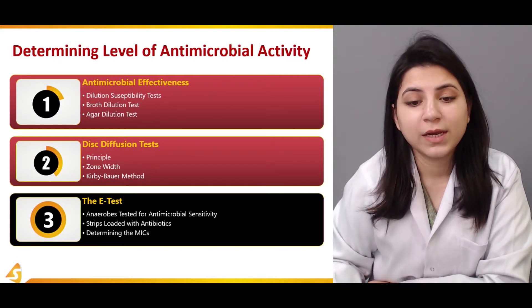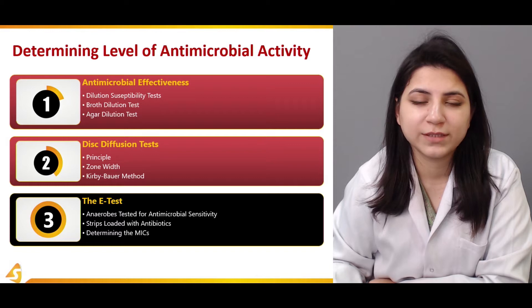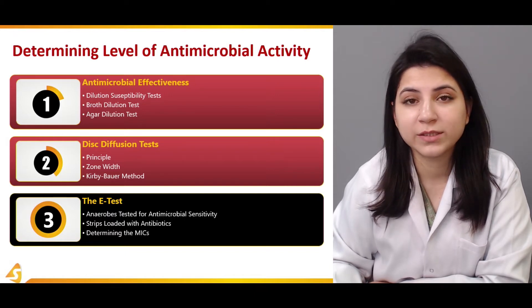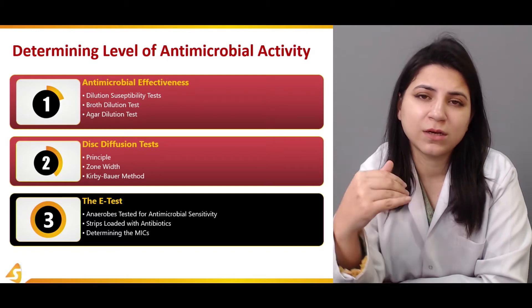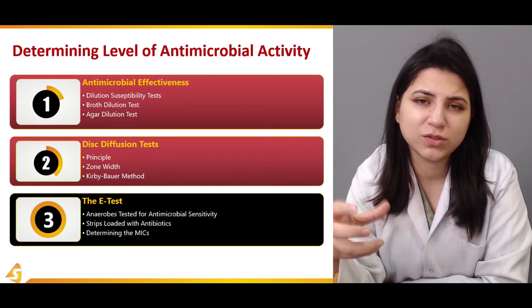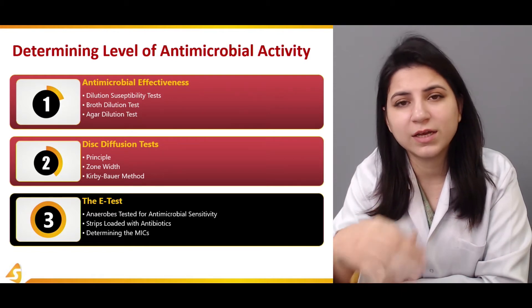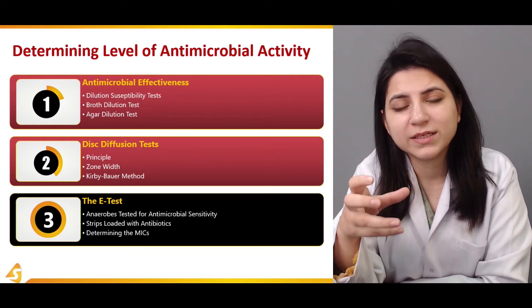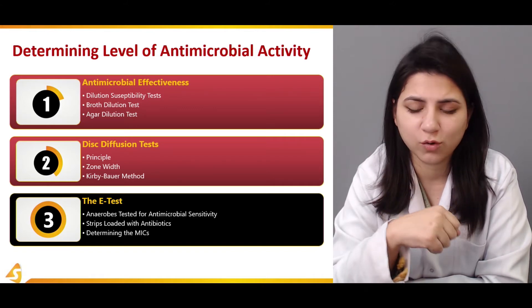In this section we'll discuss the anaerobes that are tested for antimicrobial sensitivity. In the E-test, strips are involved and those strips are impregnated with antibiotics of different types. This principle is somewhat similar to the disc diffusion test, and we determine the MIC — in every test the level of antimicrobial activity is checked by determining the minimum inhibitory concentration of the antimicrobial agent.